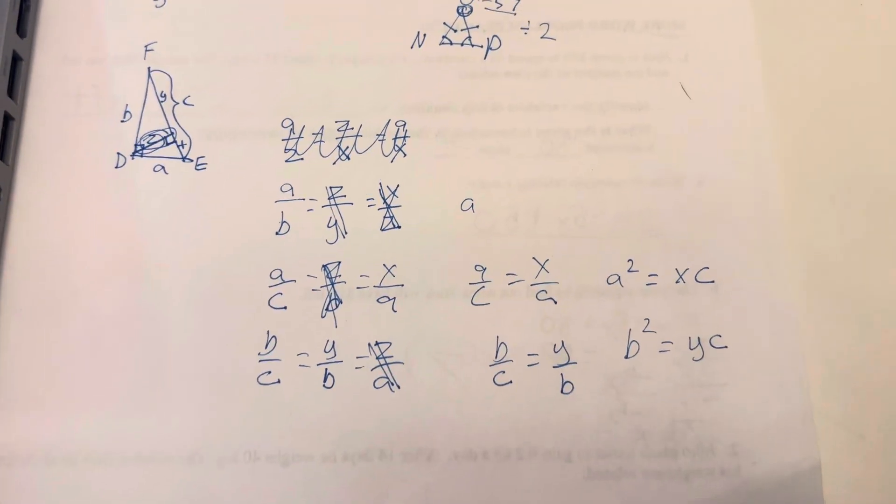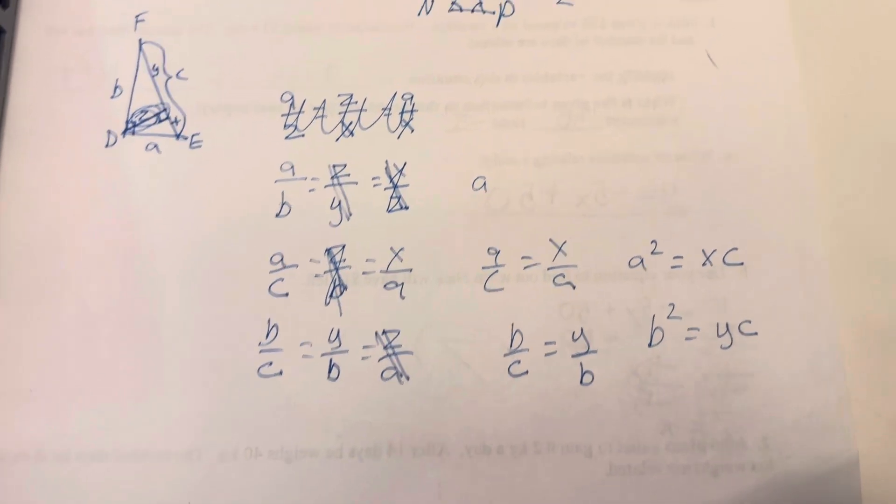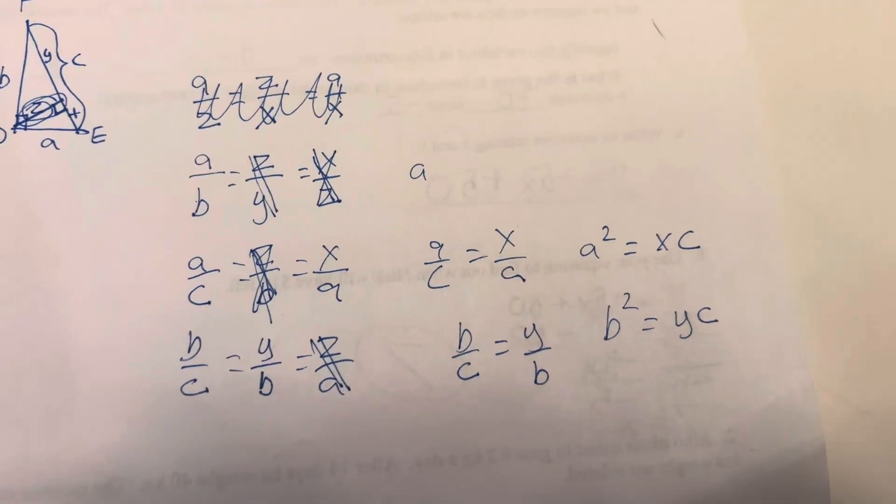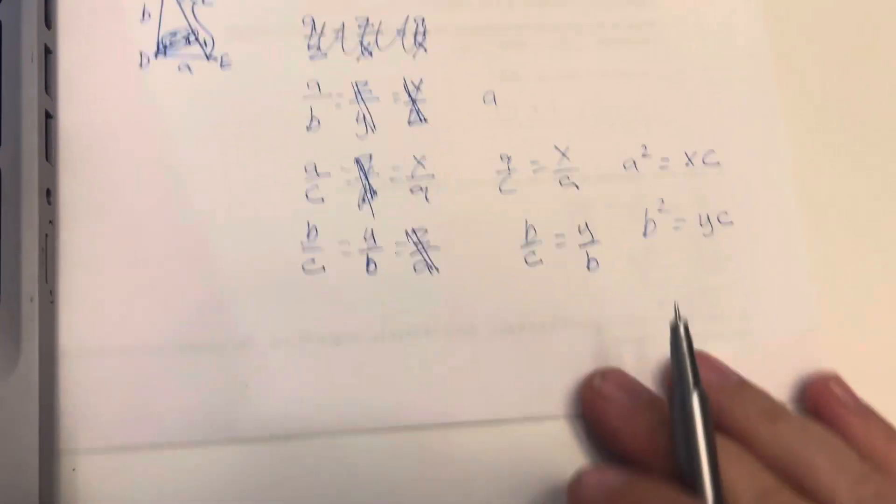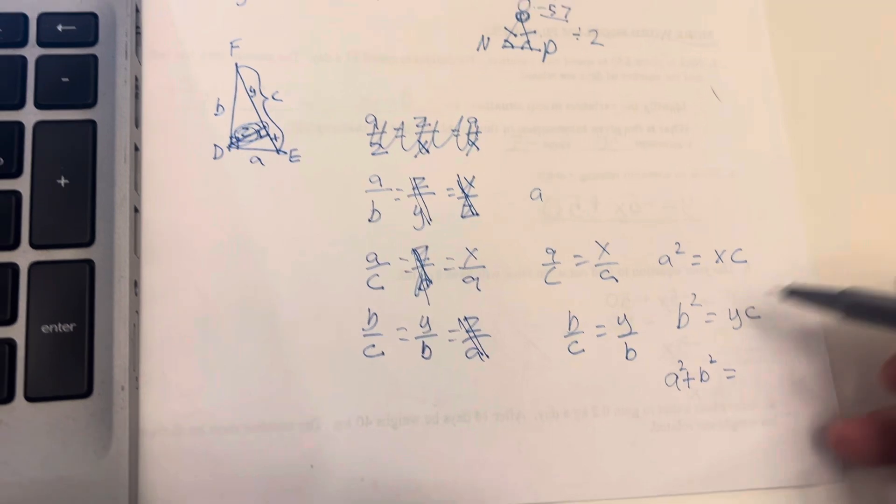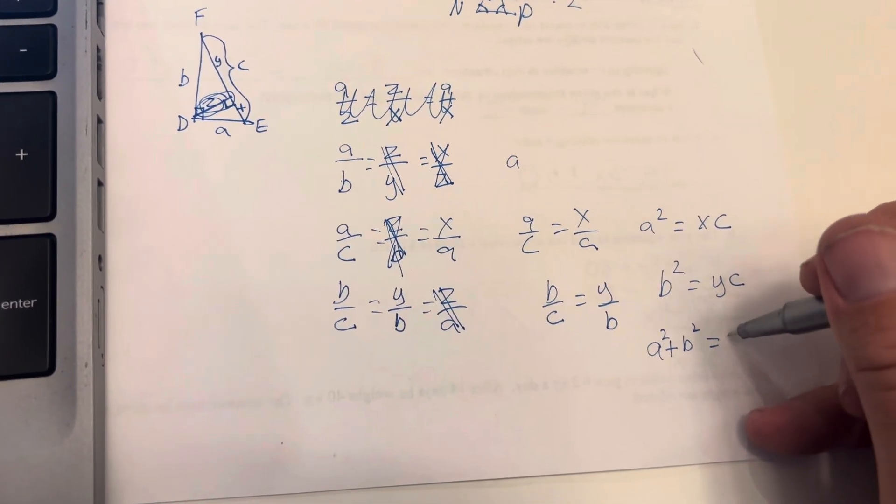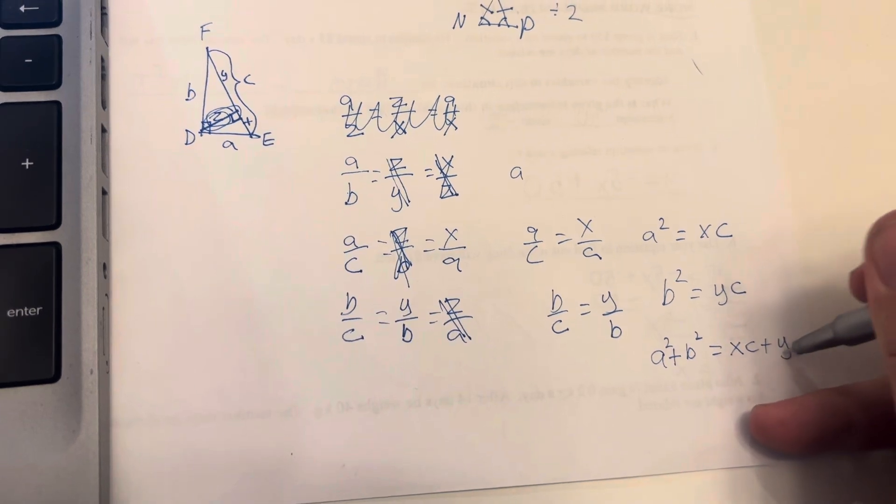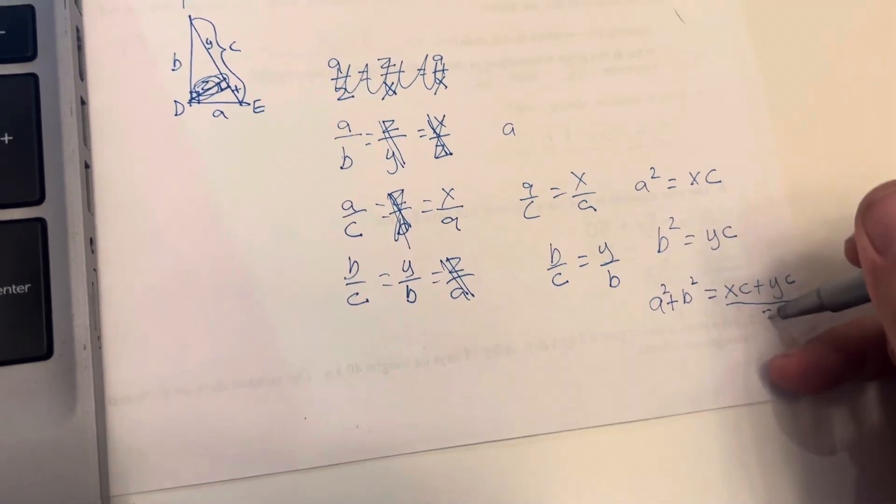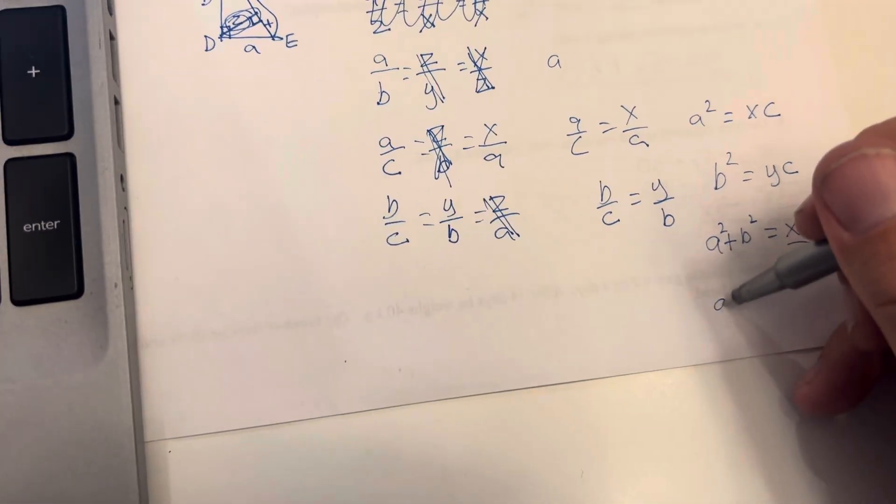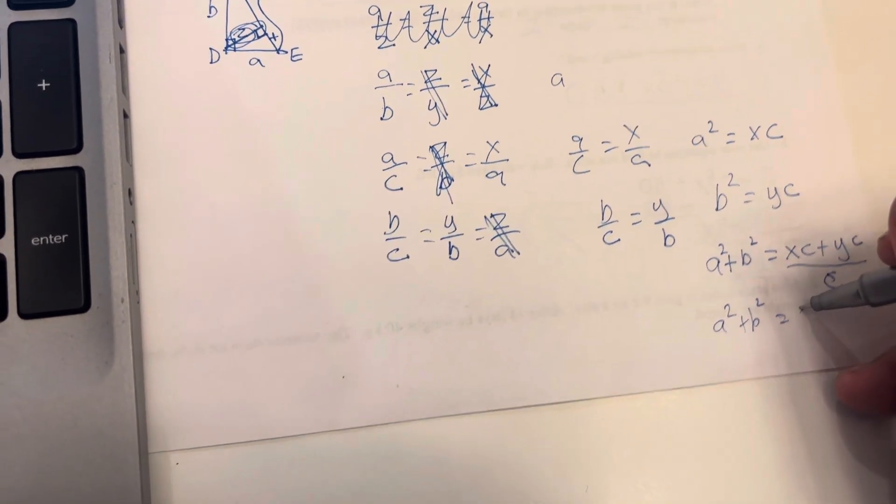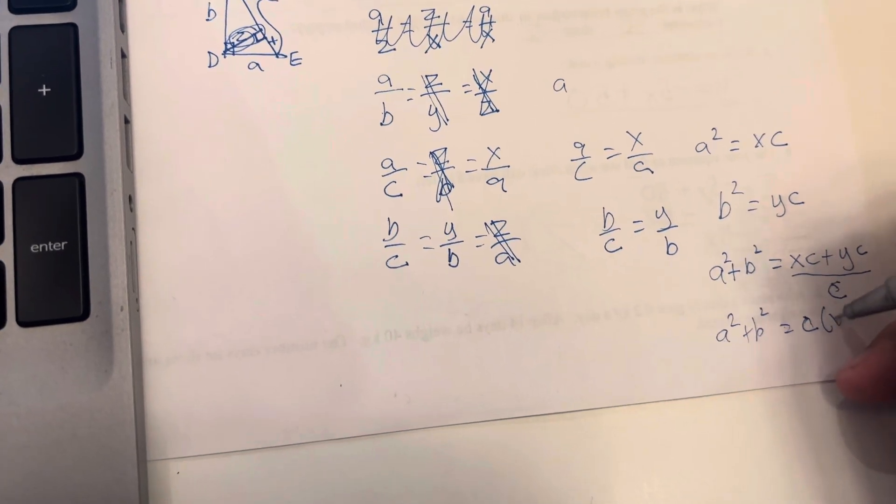So, we're doing some things mathematically here. Now, I have an inkling of an idea how the Pythagorean theorem works. I know it says A squared plus B squared. So, I'm going to add these together. So, A squared plus B squared is equal to, if I know these are equal, I know that's equal to XC plus YC. Okay, then if I know that, I can factor the C out of this side. And I can say A squared plus B squared is equal to C times X plus Y.